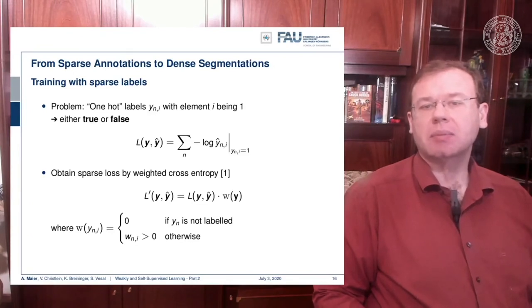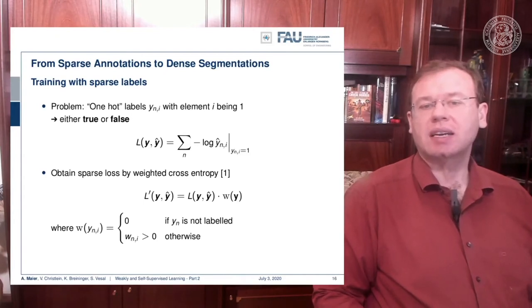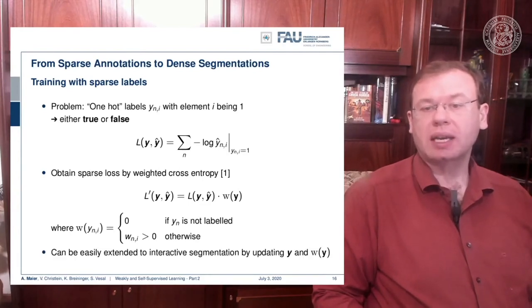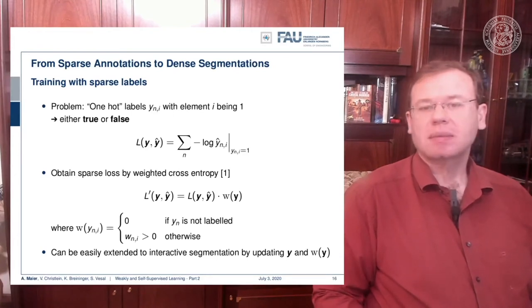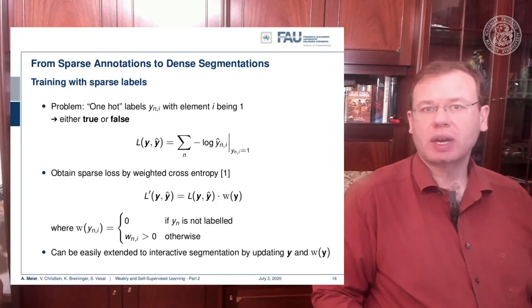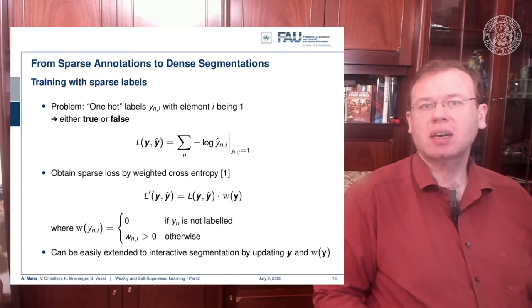In the weighted cross-entropy loss, you multiply the original cross-entropy with an additional weight w. This w is set to 0 if the sample is not labeled, and assigned a weight greater than 0 otherwise. By having this w, you can also extend the approach to be interactive by updating y and w over iterations of user input — meaning you update the labels iteratively. This way you can work with sparsely annotated 3D volumes and train algorithms to produce complete 3D segmentations.